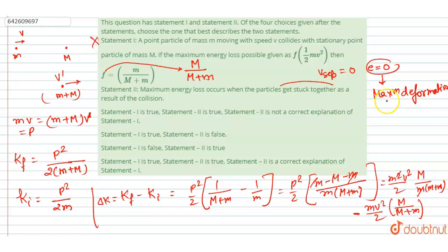And in inelastic collision, maximum deformation occurs. So if the deformation is maximum, then what will happen? The particles don't reform at all. If the particles don't reform at all, loss of kinetic energy will be maximum. So delta K is kinetic energy loss.